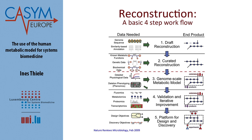The basis of the reconstruction process is a four-step workflow. Starting from genome sequence and genome annotation, you identify all biochemical enzymes or gene products found in the sequence based on EC number, name matching, etc., and match that with a biochemistry database such as KEGG or BRENDA to generate a draft reconstruction—essentially a list of biochemical reactions known to be encoded by the genome of the organism being reconstructed.